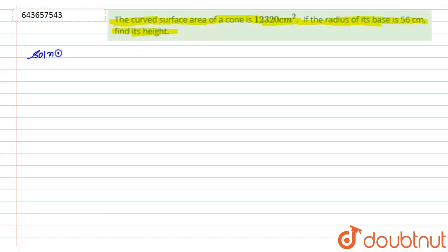In this question, the curved surface area of the cone is given to us. That is CSA of cone is given to us, that is 12,320 centimeter square.